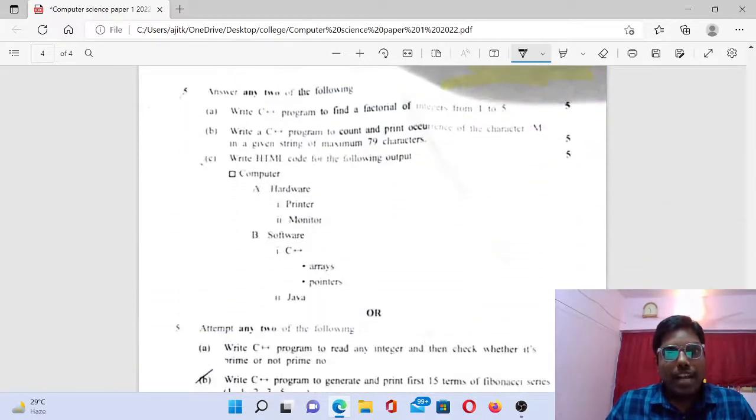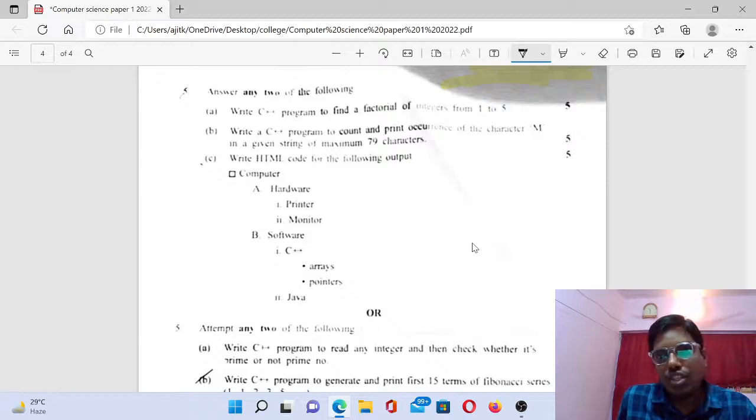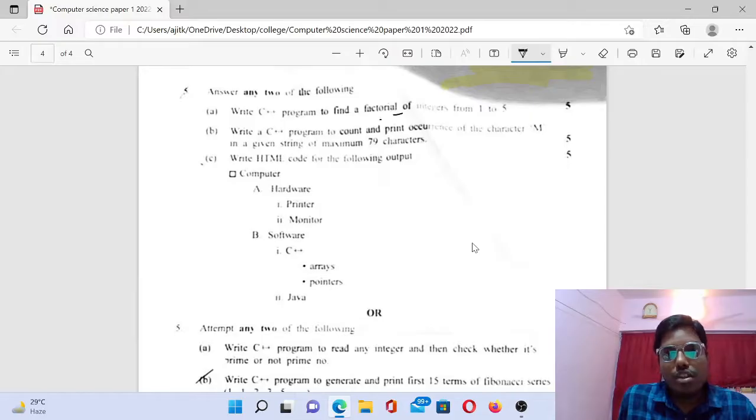At last, the programs are there, the important programs that have been listed six months back. You have referred these questions: factorial of an integer from 1 to 5, maximum account and print the occurrences of letter M, like this.